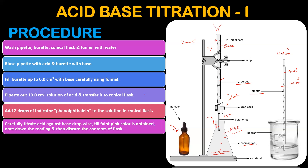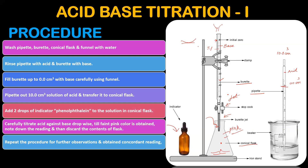We will wash the conical flask and repeat the process. The burette only needs to be refilled if necessary, but the pipette solution will always be freshly filled. We will repeat the titration and record a second reading — for example, 14.4.